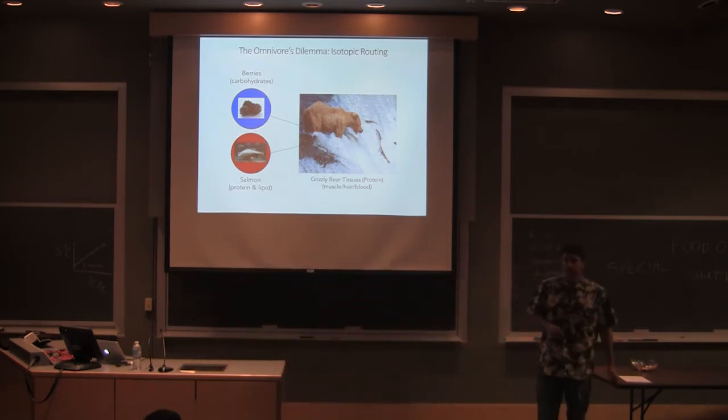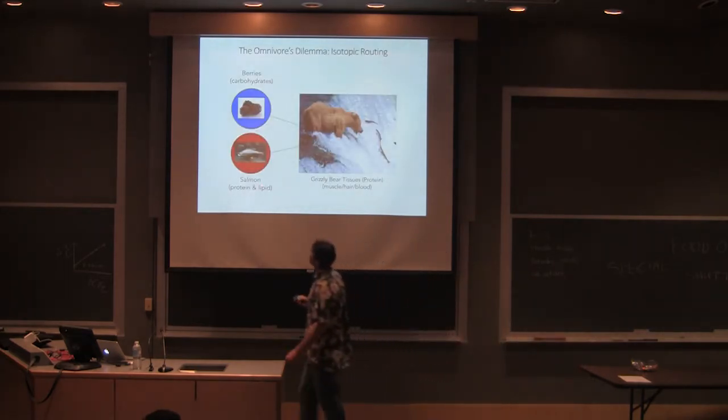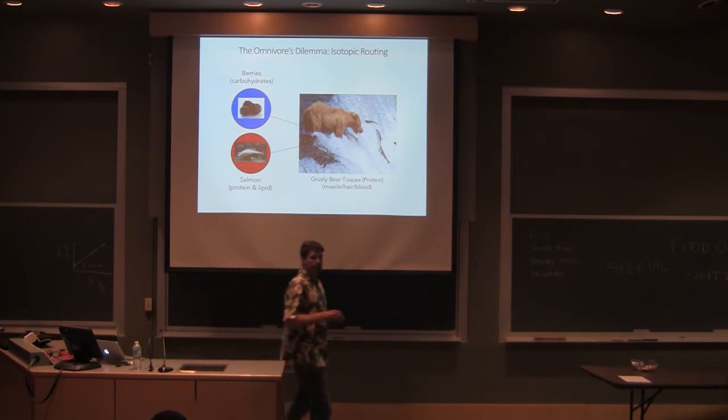The perfect omnivore besides their cells, right? It eats berries which are largely carbohydrates, sugar. There's not a lot of protein in there, not a lot of fat. And it eats salmon, which is full of fat and protein.